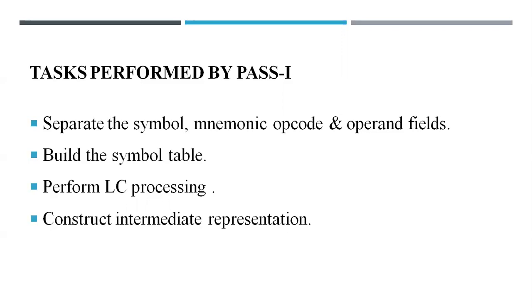The next step is to perform LC processing — location counter processing. LC processing is required to find out the address of each instruction, and at the same time to identify the address of the symbols and literals encountered in the assembly language program. The next step is to construct the intermediate representation (IR).